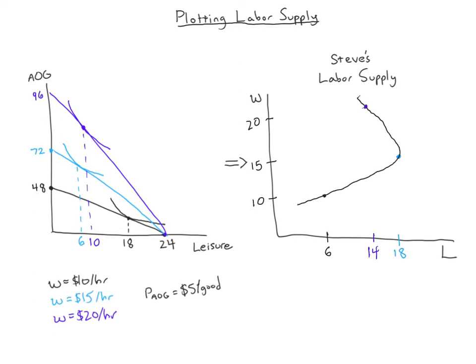What we find is what's called the backward-bending labor supply curve — the name comes from the shape. You'd normally expect labor supply to slope straight upward, but because income and substitution effects compete, as the wage rises we can actually work less. Between the $15 and $20 points, the income effect dominates, so we work less. Between $10 and $15, the substitution effect dominates — you substitute away from leisure — though the income effect partially cancels it out, just not enough to override it.